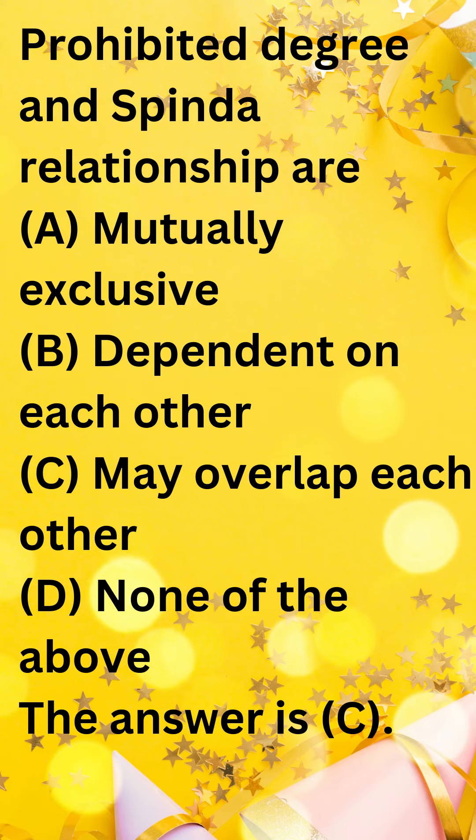It is also possible for two people to be sapindas even if they are not in a prohibited degree of relationship. For example, two cousins who are the same age are sapindas, but they are not in a prohibited degree of relationship if they are from different gotras.